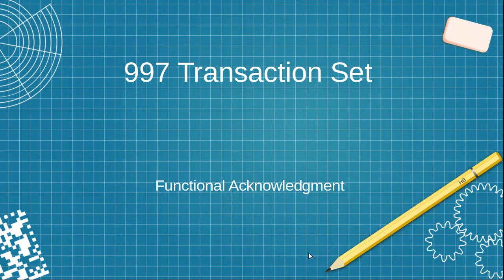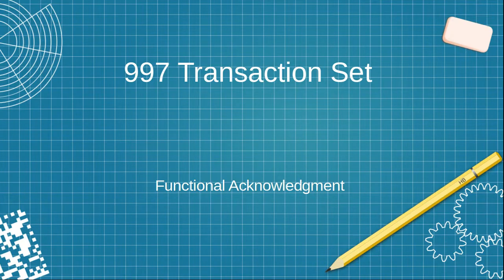Welcome, friends. Today we will understand the 997 transaction set — how we need to use it, what is the meaning of the 997 transaction set, and in which industry we generally use this. The EDI 997 is a transaction set used for the functional acknowledgement. The EDI 997 functional acknowledgement is sent as a response to other EDI transactions received.